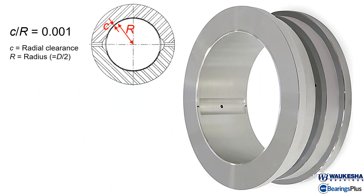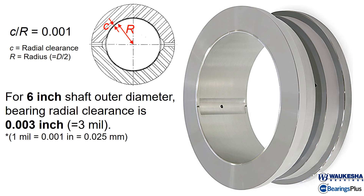Sleeve bearings typically have a C over R ratio of 0.001. This means that if you have a 6-inch shaft outer diameter or bearing inner diameter, the bearing radial clearance is 3 thousandths of an inch.